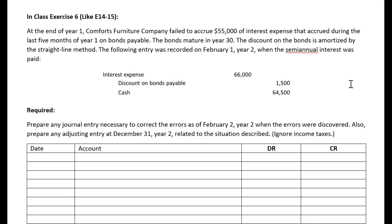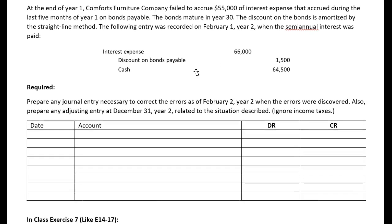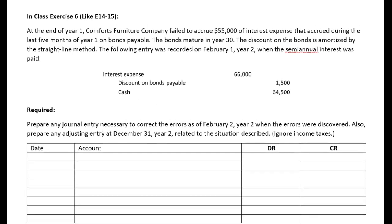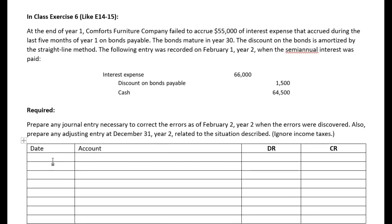In a straight-line bond, the entry every six months is identical — we recognize the same amount of expense and discount each six-month period. But in this problem, they actually failed to record an adjusting entry. At the end of December, no entry was recorded, and on February 1st they recorded interest expense of $66,000. Between January 1st and February 1st, you cannot really have six months worth of interest.